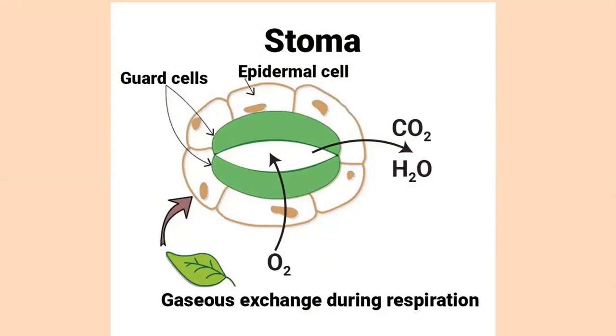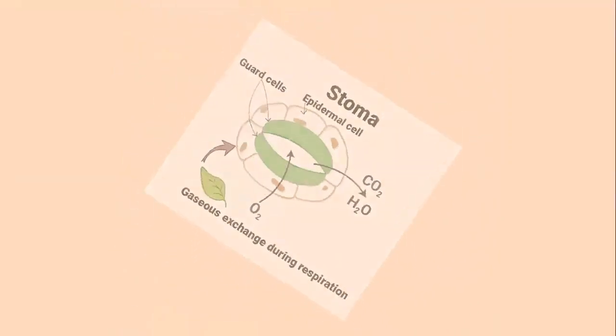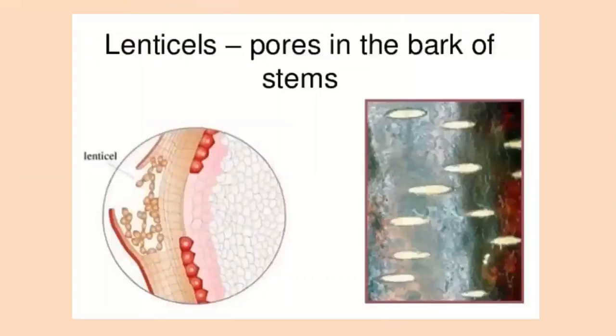In plants, almost every part breathes. Oxygen obtained from the atmosphere diffuses in not just through the stomata present in the leaves, but also through the lenticels present in old stems and the general surface of the roots.